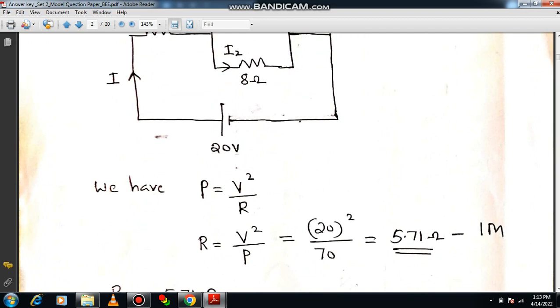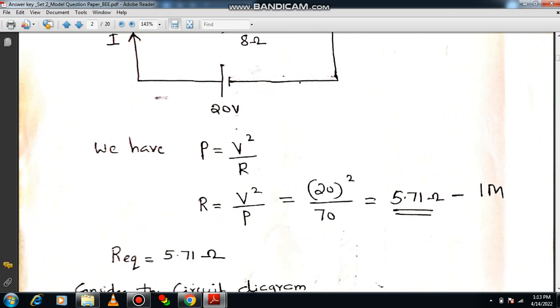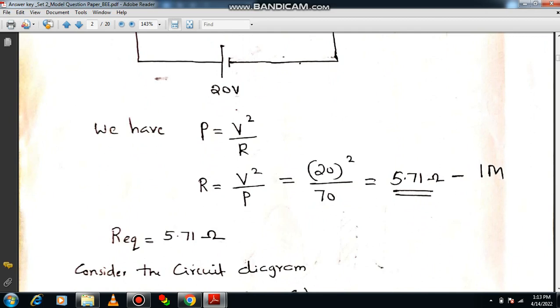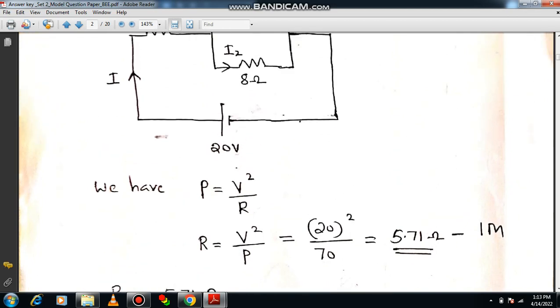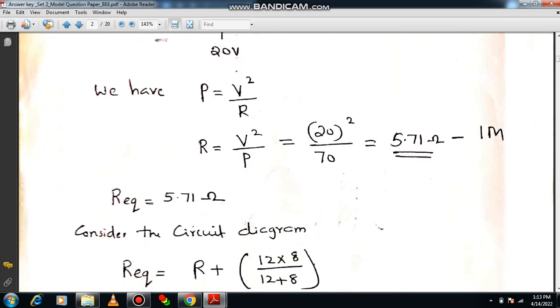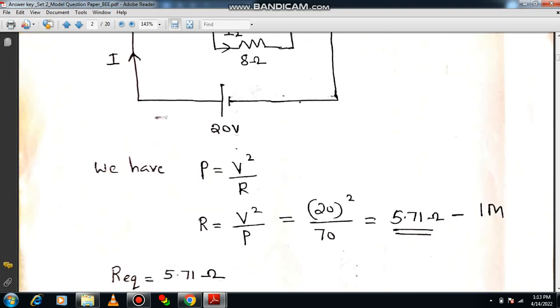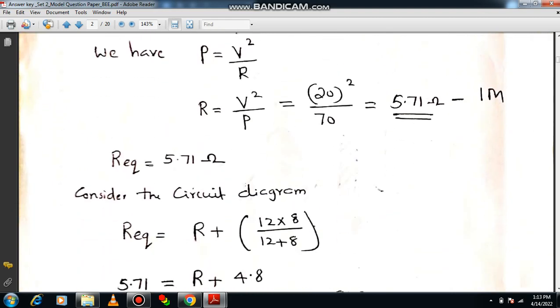First and foremost, you know the equation P = V²/R. From this you can calculate the unknown resistor R, that is V²/P. You will be getting 5.71 ohm. You will be getting 1 mark. That means R will equal the effective resistance or equivalent resistance, that is 5.71 ohm. But if you talk about the equivalent resistance, how do you calculate it?